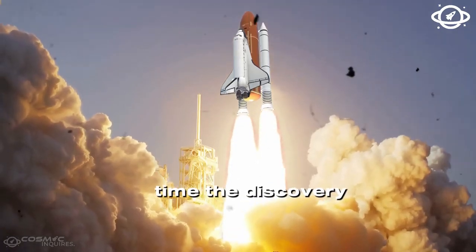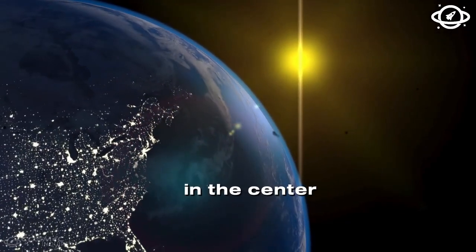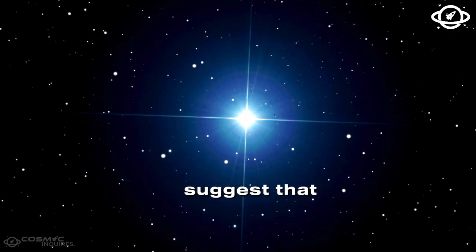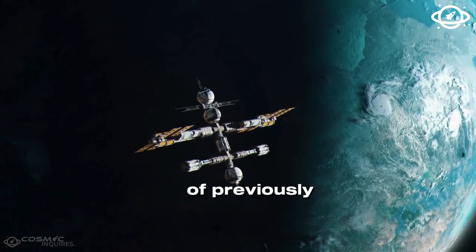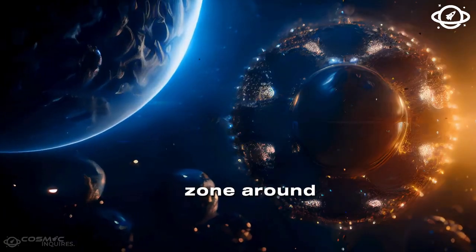At the same time, the discovery of S-471 and four other faint stars in the center of the Milky Way suggests that there could be a whole population of previously undiscovered stars hidden in the extreme zone around the black hole.